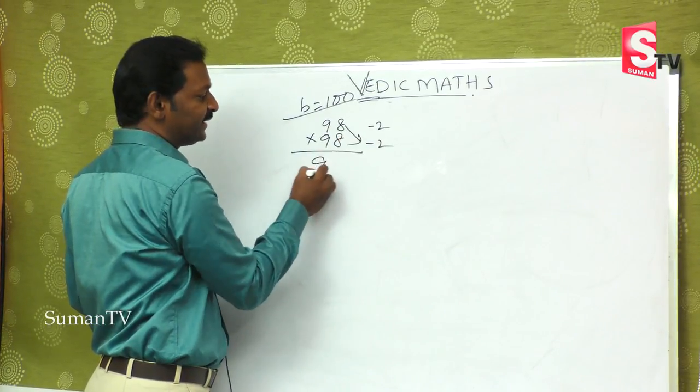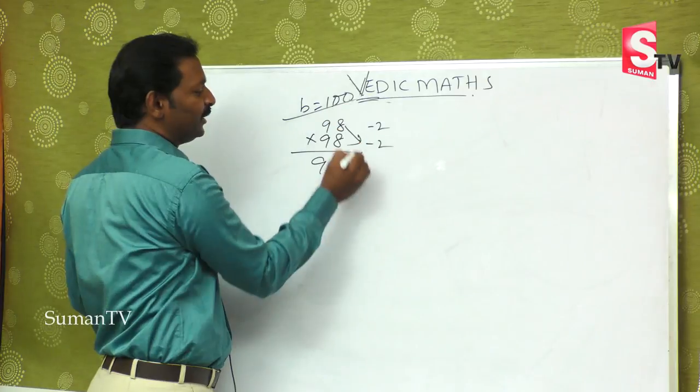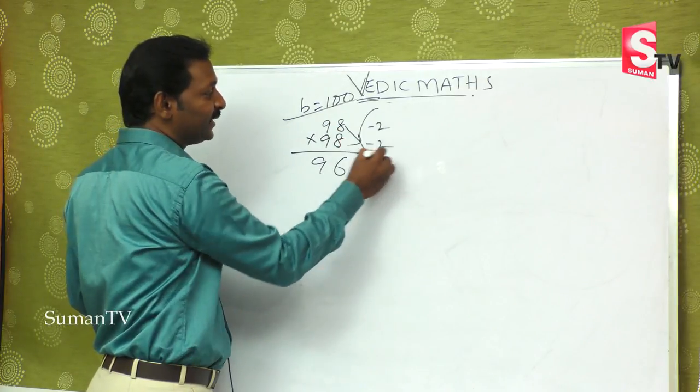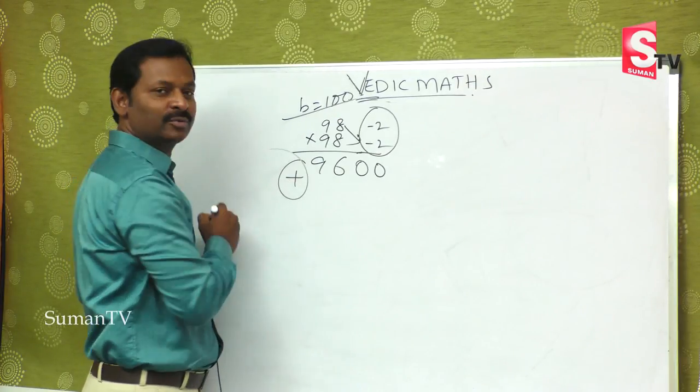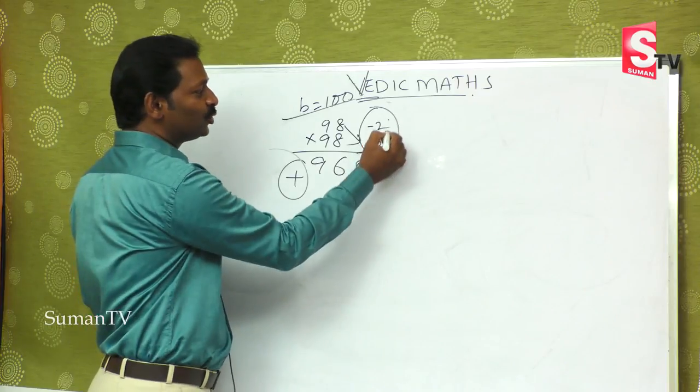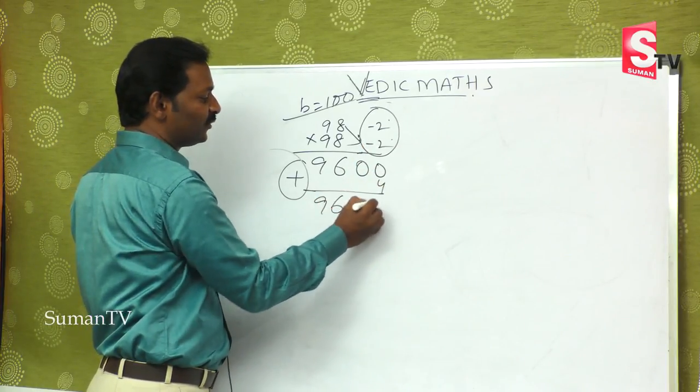Suppose 98 is multiplied by 98, the base is 100. The first part of the answer is 96, and minus into minus gives plus, so 2 times 2 is 4, giving us 9604.